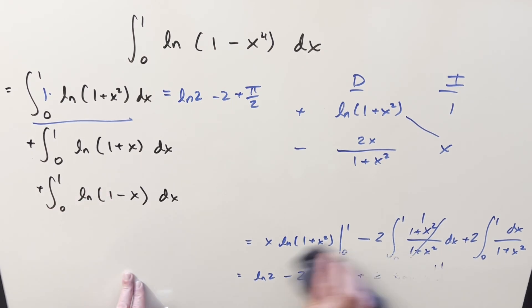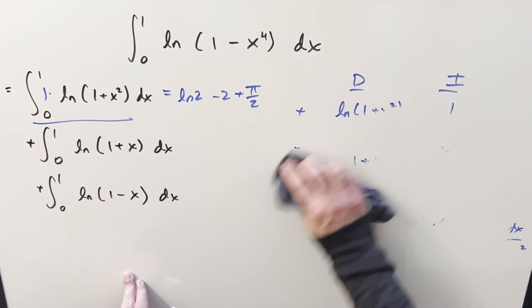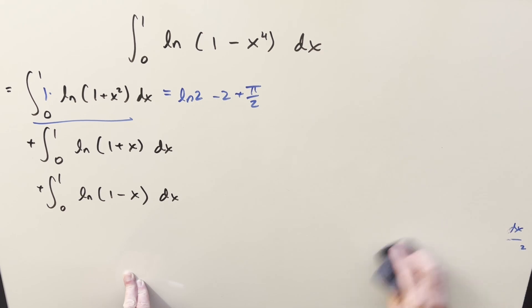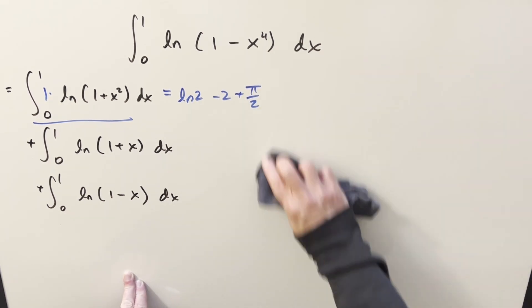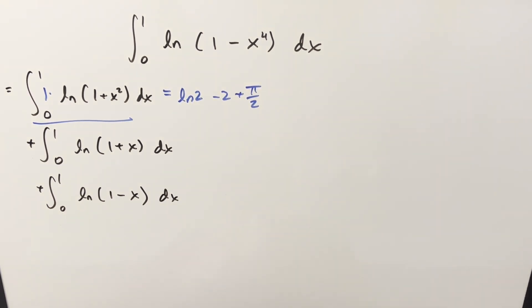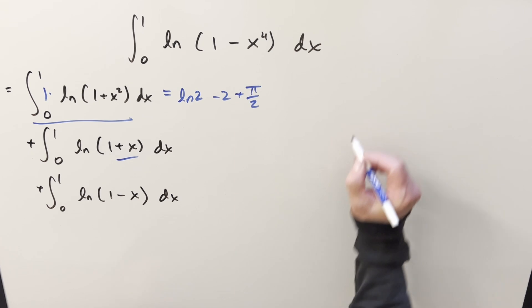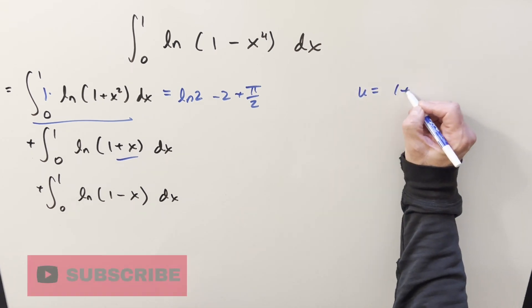Now for these other two integrals, these should be easy. I'm just going to do quick substitutions on them. You could probably kind of do it on the fly, but let's just do the substitution to make it all clear. So what's going to happen on this first one, we'll do a u substitution for one plus x, then du is going to be just dx.